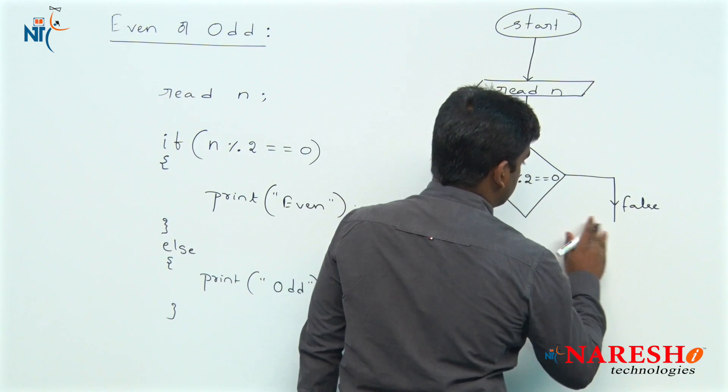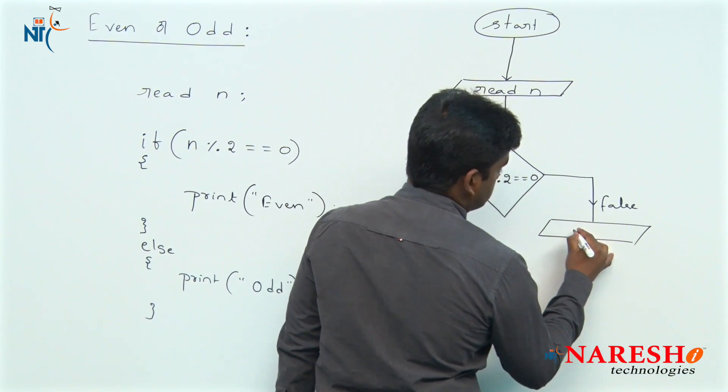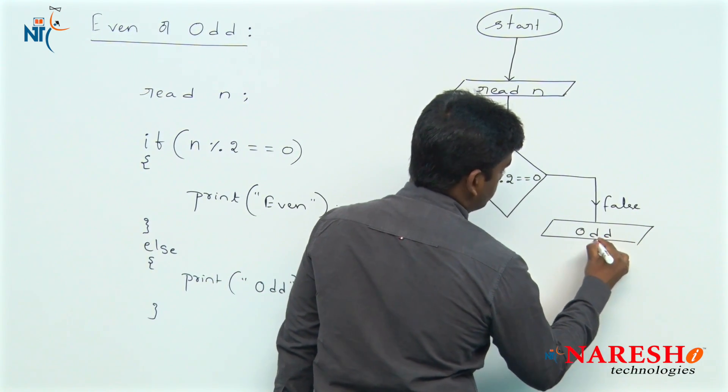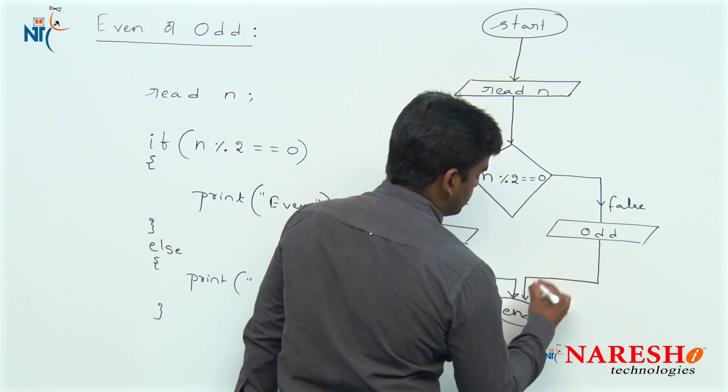In a false case, we are printing the message it is an odd number. This is the flow, simple.